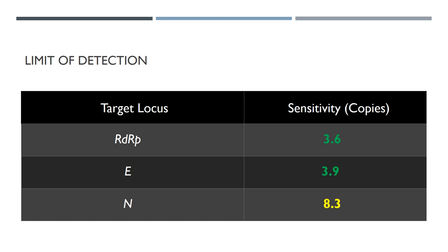The limit of detection, how sensitive is the RTQ-PCR? For the RdRP, it can detect up to 3.6 copies of the gene, which means that if you had 3 copies or 3 viruses which are intact in a cell, you can detect it. And the same is for the E and N genes.